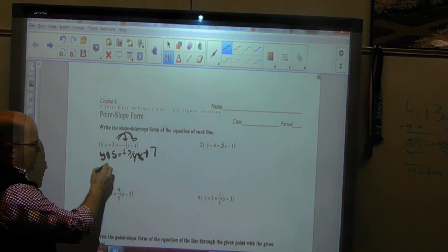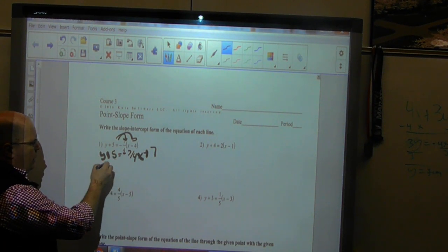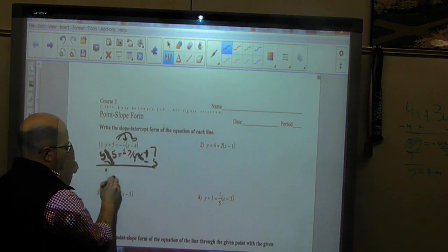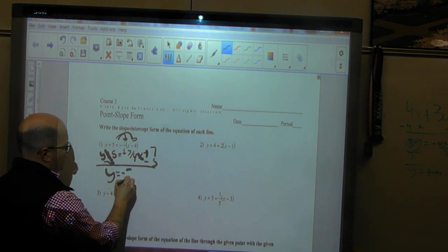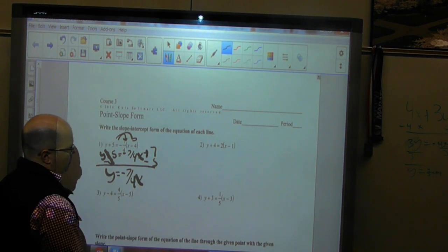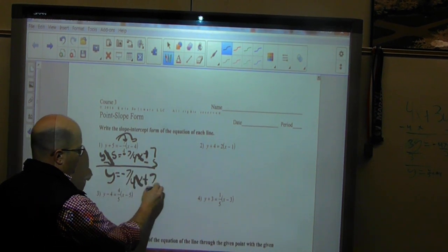So I distributed it, now I just isolate my y. I'm adding 5, so to isolate it I need to minus 5. And I'm left with my answer, which is y equals negative 7 over 4x, and positive 7 minus 5 is a 2.